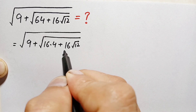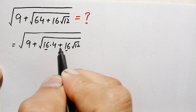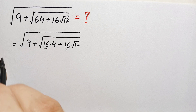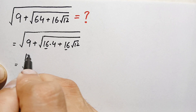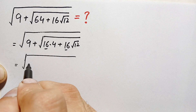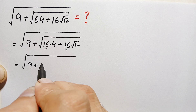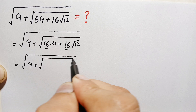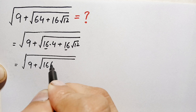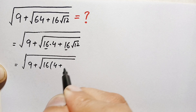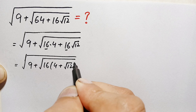In these two terms, 16 is common, so we take 16 out as a common factor. This becomes the whole square root of 9 plus square root of 16 times, in brackets, 4 plus square root of 12.